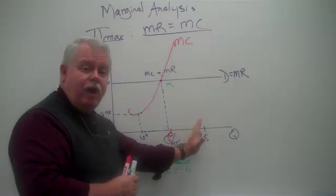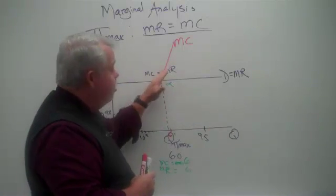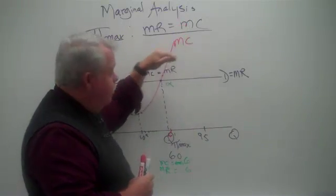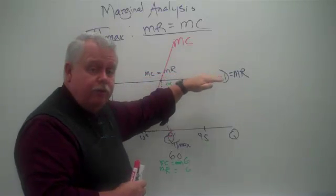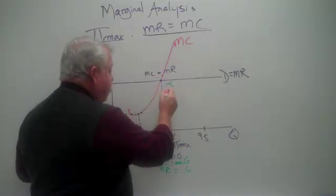Neither should they produce anything beyond 61 because all the way out on this range of production, the cost of each unit is more than the revenue it generates. So their bottom line is here's where you produce, point alpha.